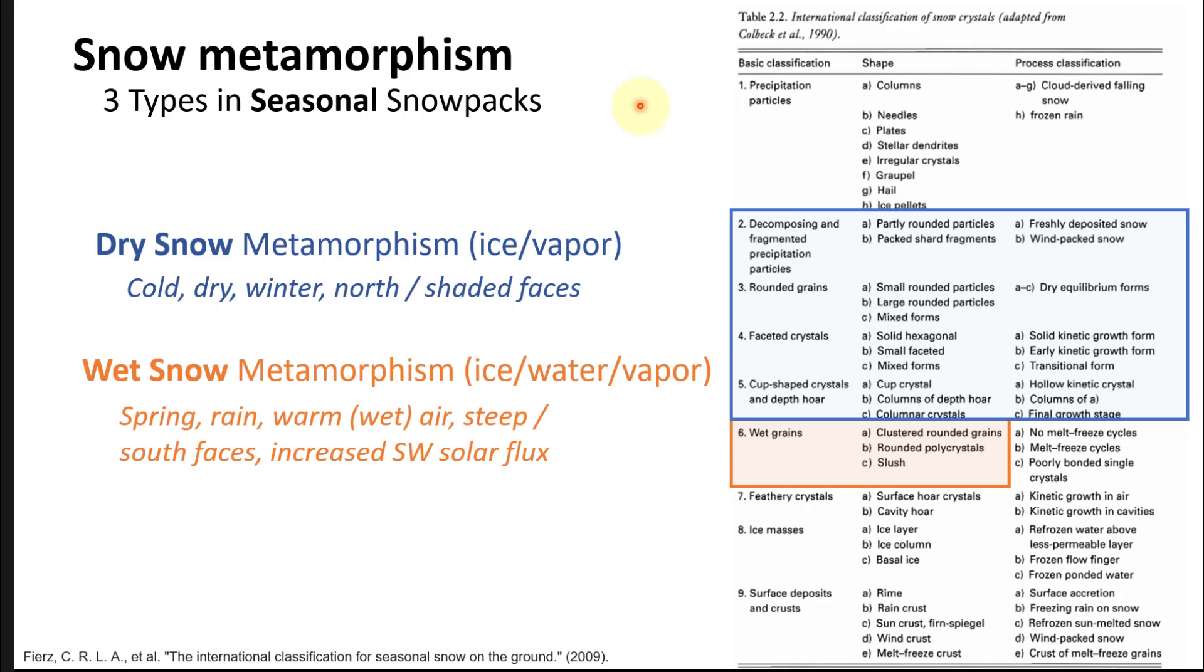What typically happens with wet grains is you're decreasing the surface area, you start to round things out. The rounding is slightly different because you now have liquid water present. You start to get clusters and larger polycrystals or groups of crystals. And if you have lots of water, high water content, then you have slush.